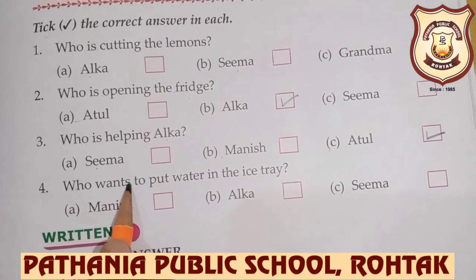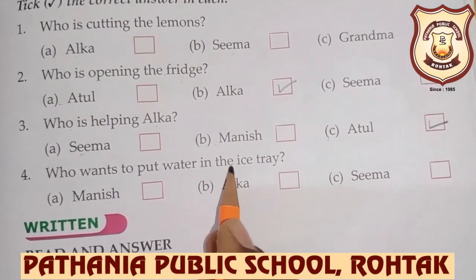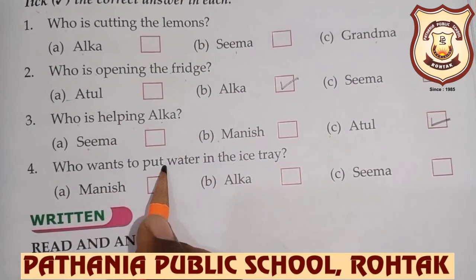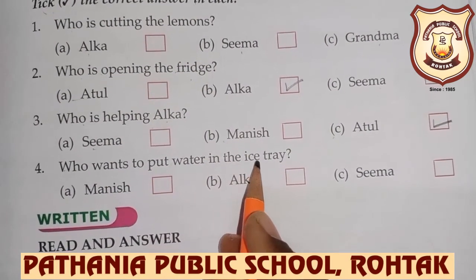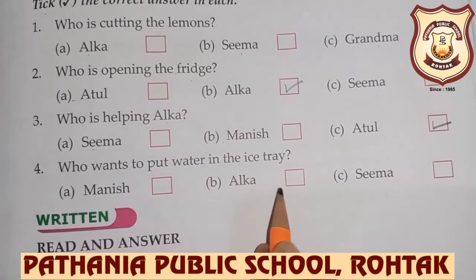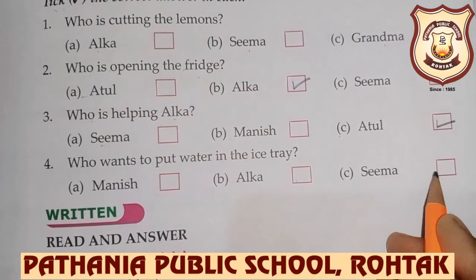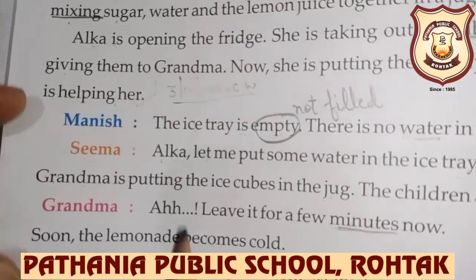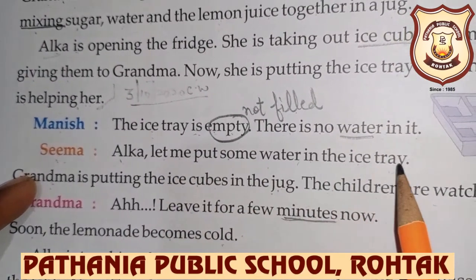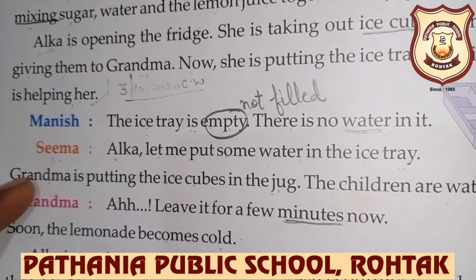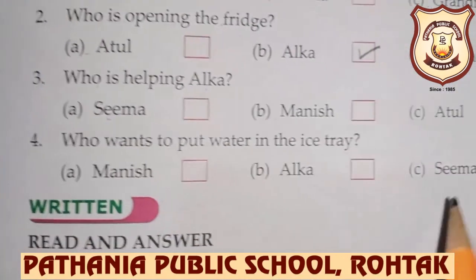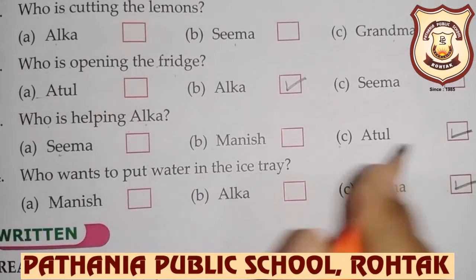Who wants to put water in the ice tray? A. Manish, B. Alka, C. Sima. Sima says, 'let me put some water in the ice tray.' So who is filling the tray? Koon fill kar raha hai tray ko? Sima. Tick on Sima.